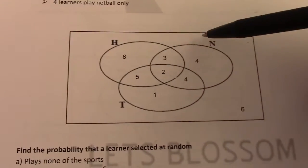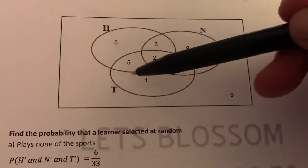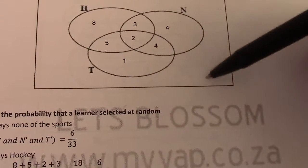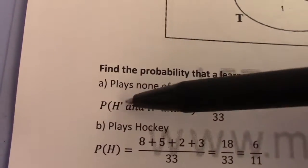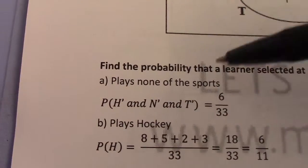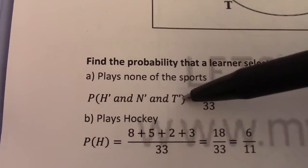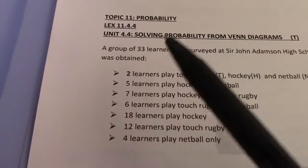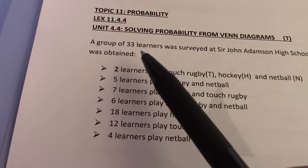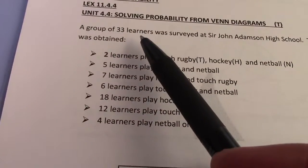So they don't play hockey, don't play netball, don't play touch rugby — that value is 6. So the probability of not hockey and not netball and not touch rugby equals 6 over 33. Remember, we have 33 learners in the sample space.